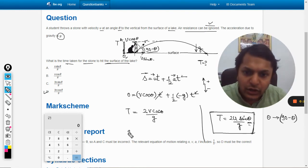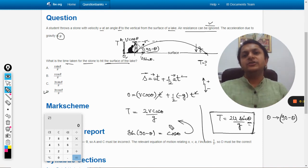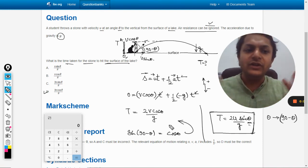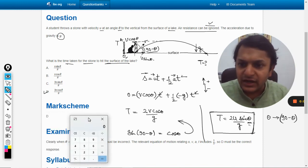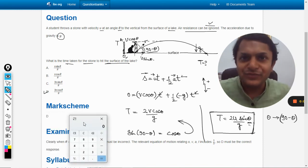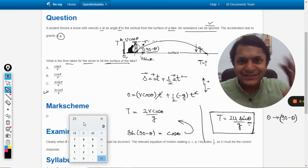And we all know that sine of 90 minus theta is cos theta, and there we are. So the formula will be created like 2v cos theta divided by g. So with this, let us verify from the mark scheme—the answer is D. There we go. All the best. Bye.